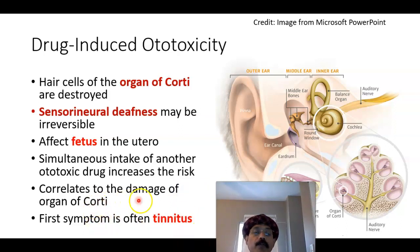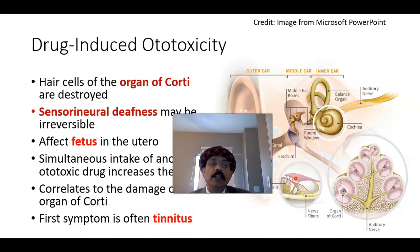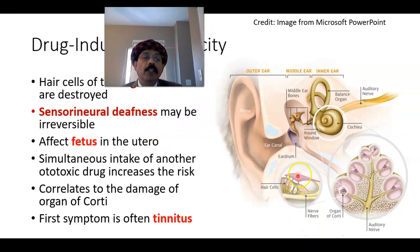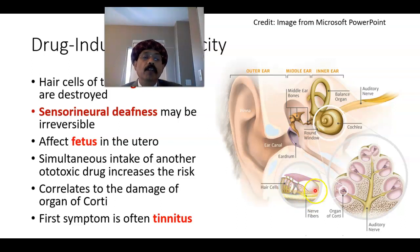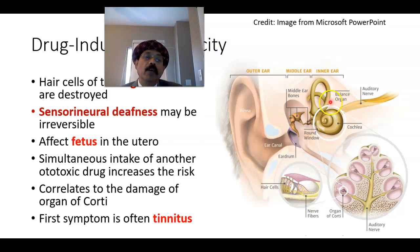Ototoxicity correlates to damage of the organ of Corti, which is located in the scala media area of the cochlea. The organ of Corti contains hair cells sandwiched between the basilar membrane and the tectorial membrane — sensed by the cochlear nerve. We also have the vestibular nerve connected to the vestibular apparatus. The cochlea is for hearing; the vestibular apparatus is for balance.